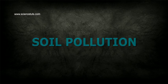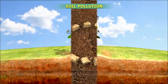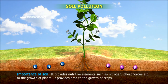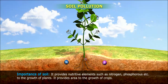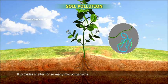Soil is a thin layer of organic and inorganic elements which covers the earth's rocky surface. Soil nutrients are important for plant growth and development. The importance of soil: it provides nutritive elements such as nitrogen, phosphorus, etc. to the growth of plants. It provides area to the growth of crops. It provides shelter for so many microorganisms.